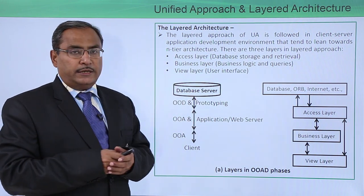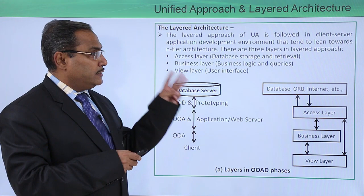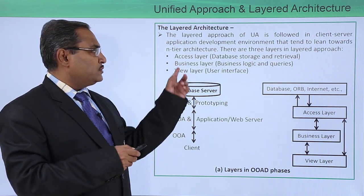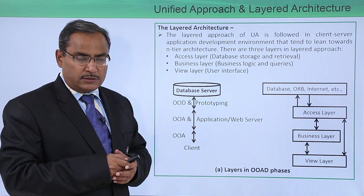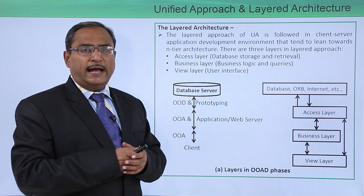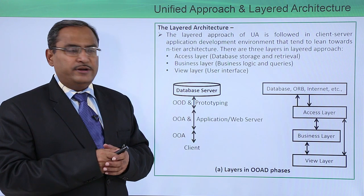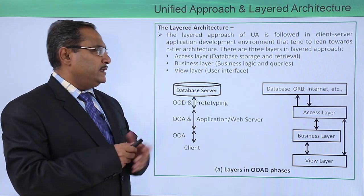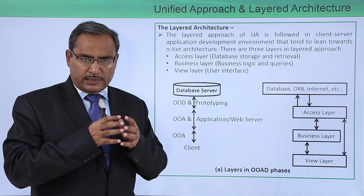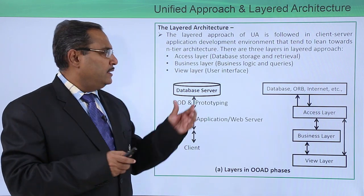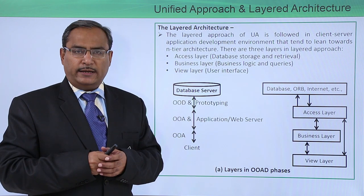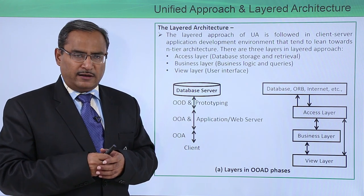In this layered architecture, we consider three layers. The first is the access layer, whose main purpose is data storage and retrieval. The second is the business layer, which holds the business logic, business constraints and queries. The third is the view layer, where the user interacts through the user interface.